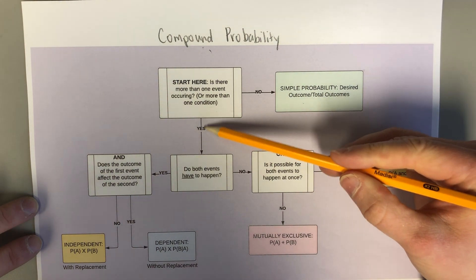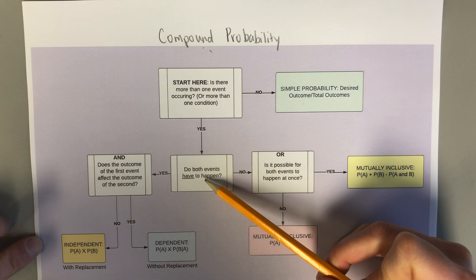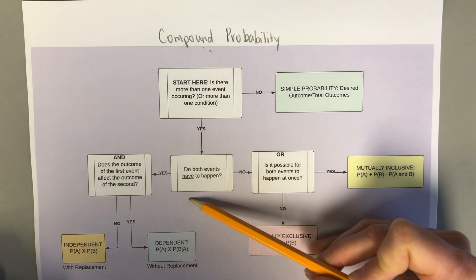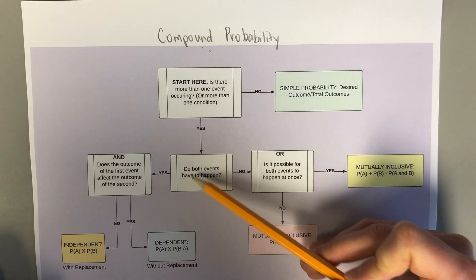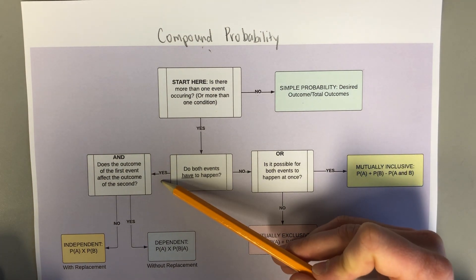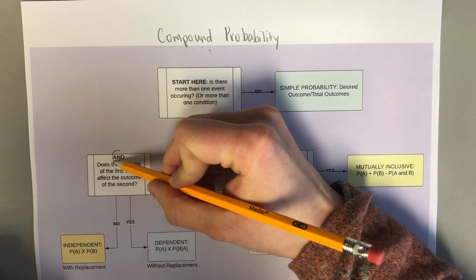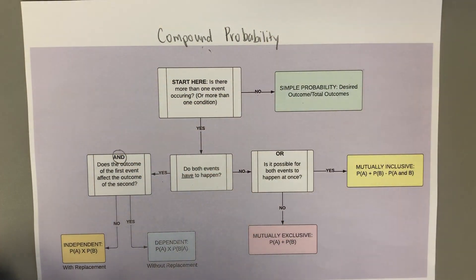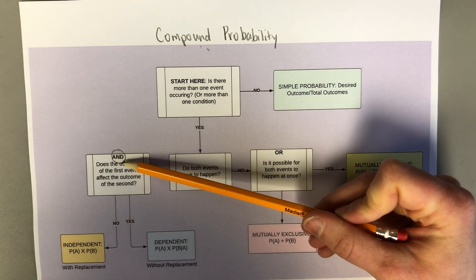If you say yes, you go down and ask yourself: do both events have to happen? If you say yes, one of the keywords you'll notice is the word "and." A lot of times you'll see this word in a question, and it's a hint that we're going to continue down this branch.